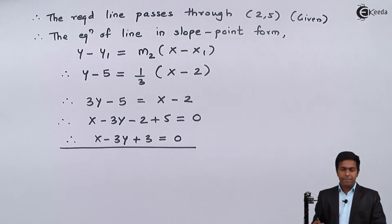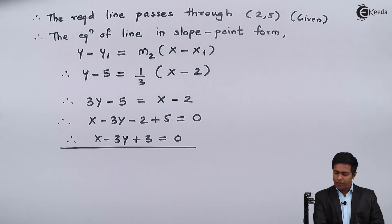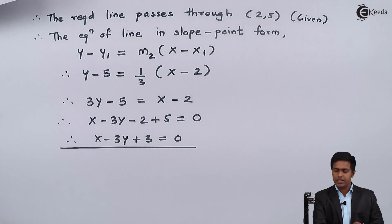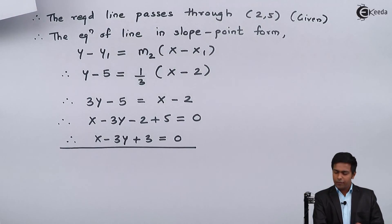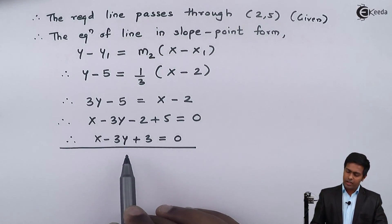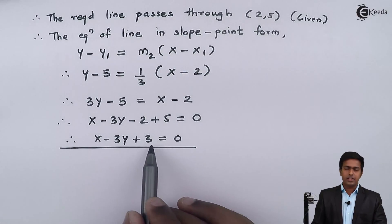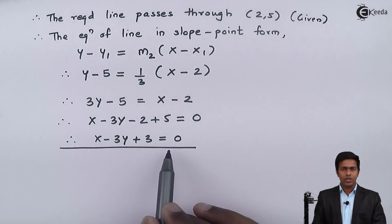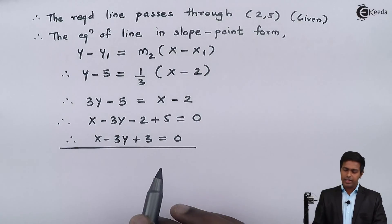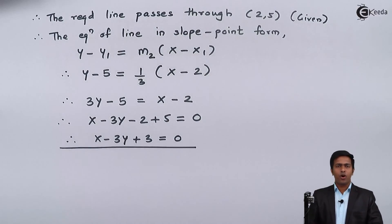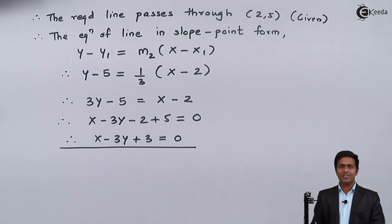We have the equation of the line in the form ax + by + c = 0. Therefore, x - 3y + 3 = 0 is the equation of the required line.